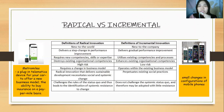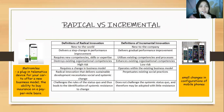Incremental innovation is new to the company. It delivers gradual performance improvement, utilizes existing competencies and processes, enhances existing organizational competencies, and is low risk, operating within the existing business model. It perpetuates existing social practice, does not challenge the systemic status quo, and may be adapted with little resistance. An example of radical innovation is Metromask in the US — a plug-in telematics device for cars offering a new business model: buying insurance on a pay-per-mile basis. An example of incremental innovation is small changes in the configuration of mobile phones.